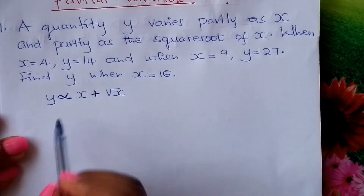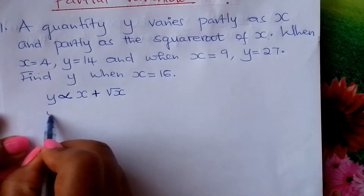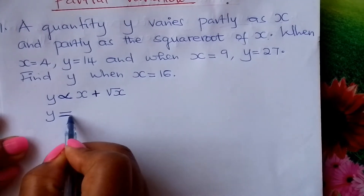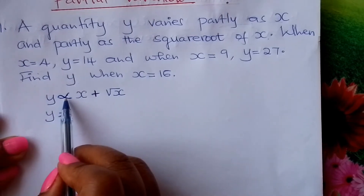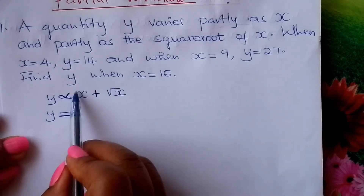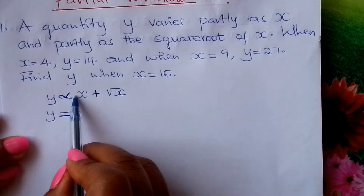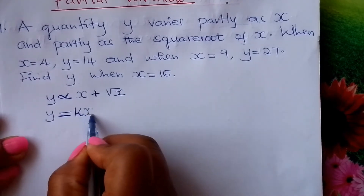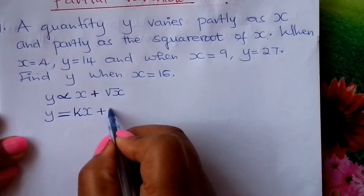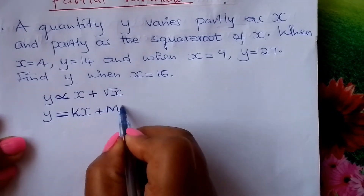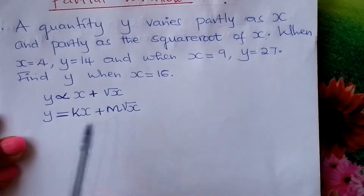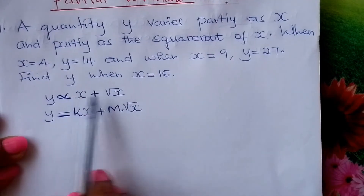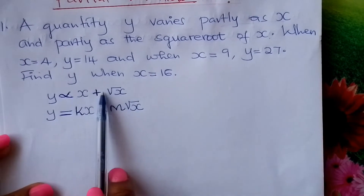The second step is to remove the proportionality sign. You replace it with an equals sign. Whenever you replace the proportionality sign, you fix a constant for each term. Suppose we put constant K multiplying X, plus another proportionality constant M multiplying the square root of X. You can use any letters — A, B, and so on. So we fix K here and M there.